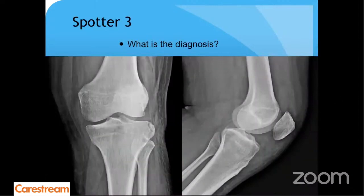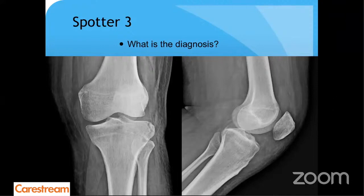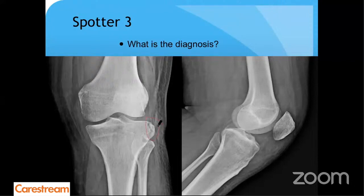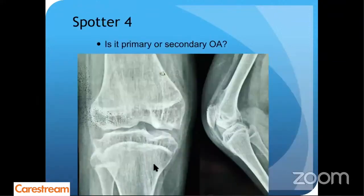Next — what is the diagnosis? This is a very subtle finding; if you go through your format, you'll find it. Be specific. Time's up. So this was a Segond fracture, which means that this patient had or has an ACL injury.